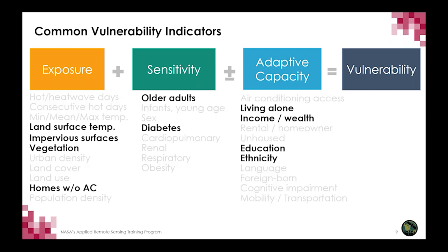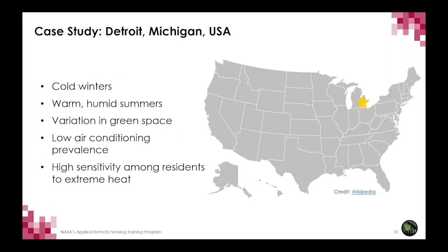For this demonstration and homework assignment, we're providing data variables to capture exposure, sensitivity, and adaptive capacity. We'll take you through a case study highlighting Detroit, Michigan, which experiences cold winters and warm, humid summers. Detroit has a lot of variation in its green space, and residents have low air conditioning prevalence. Epidemiologic research has found that amongst Detroit residents, there is a high sensitivity to extreme heat — when it gets hot, residents have a harder time coping with that.